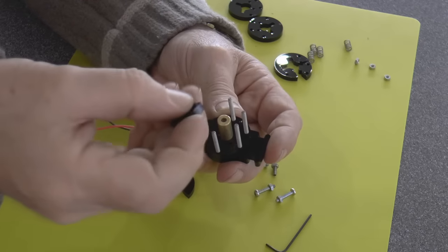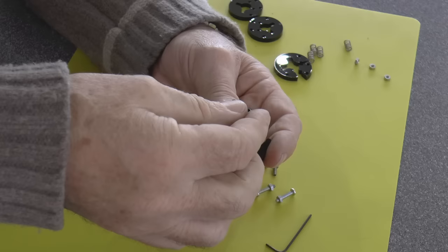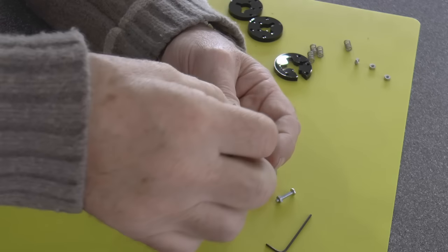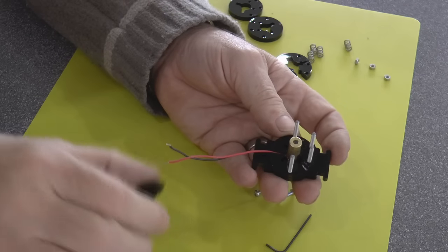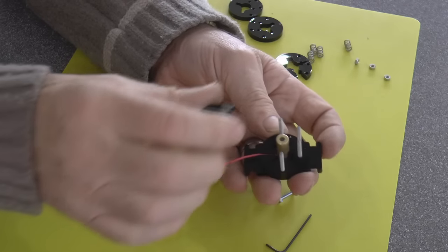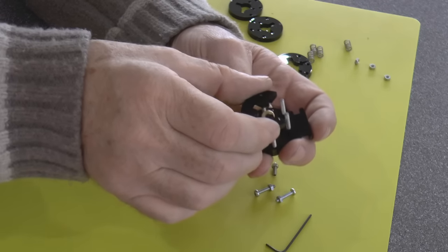Next stage is we need one of these little pieces of cheese and we're going to drop those over there. Then we're going to have one of these three-quarter quadrant pieces and drop that onto the other two screws.